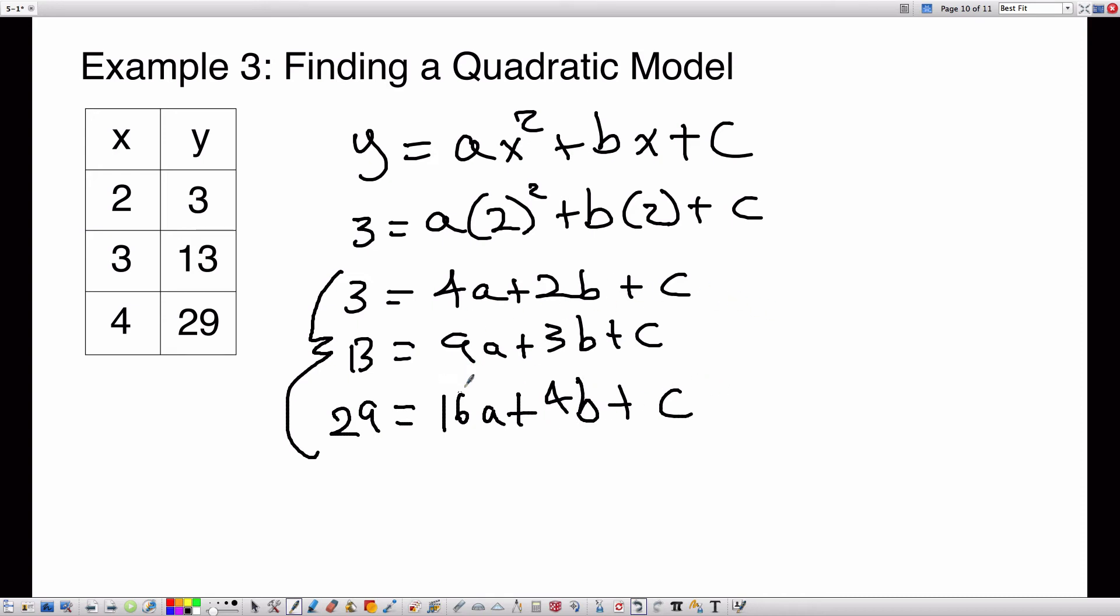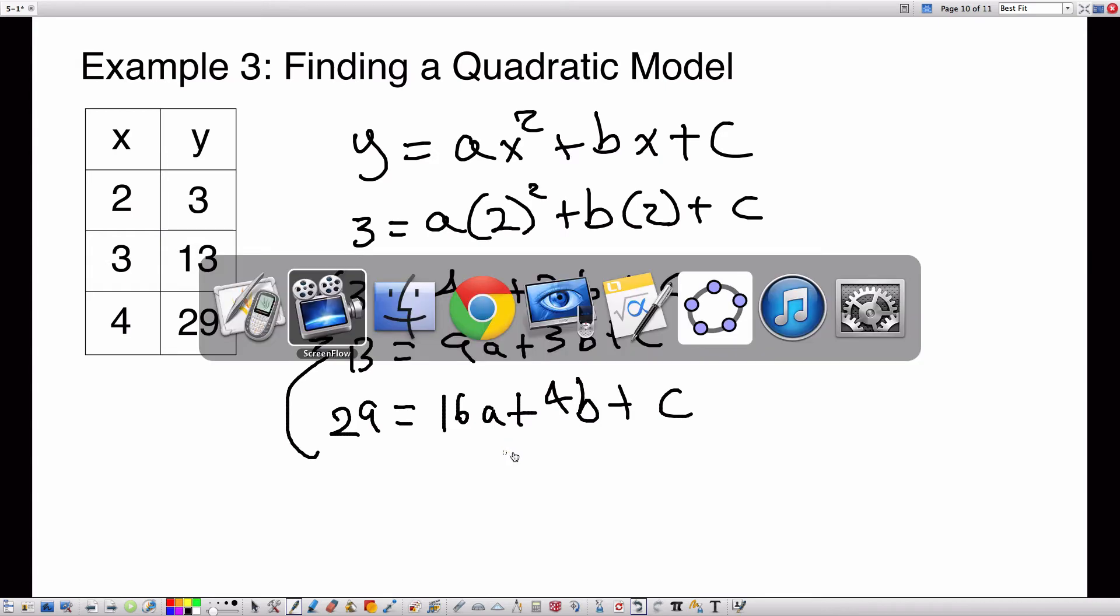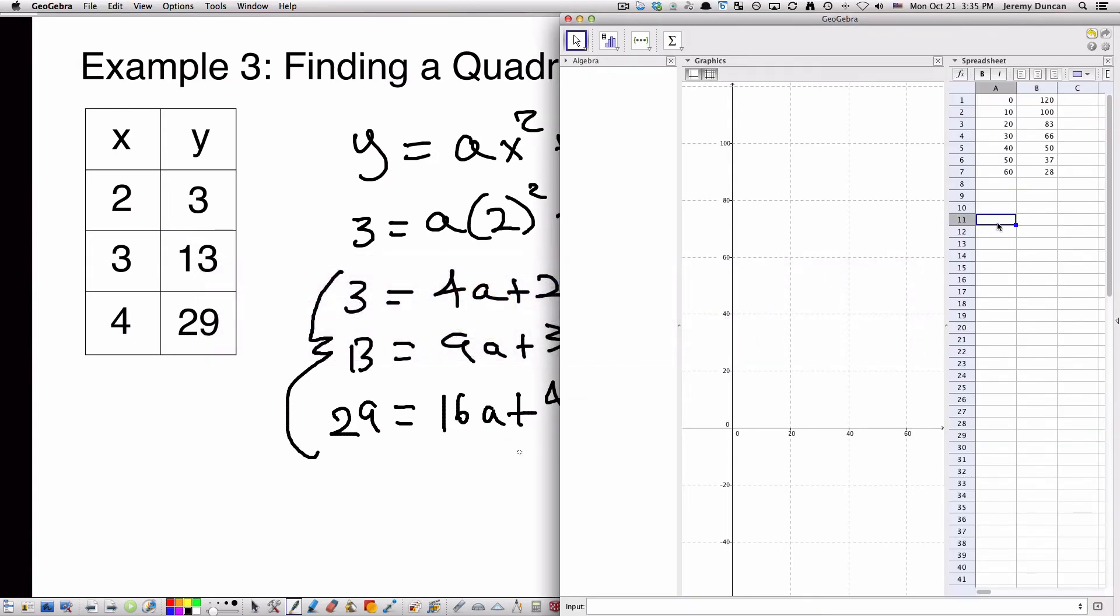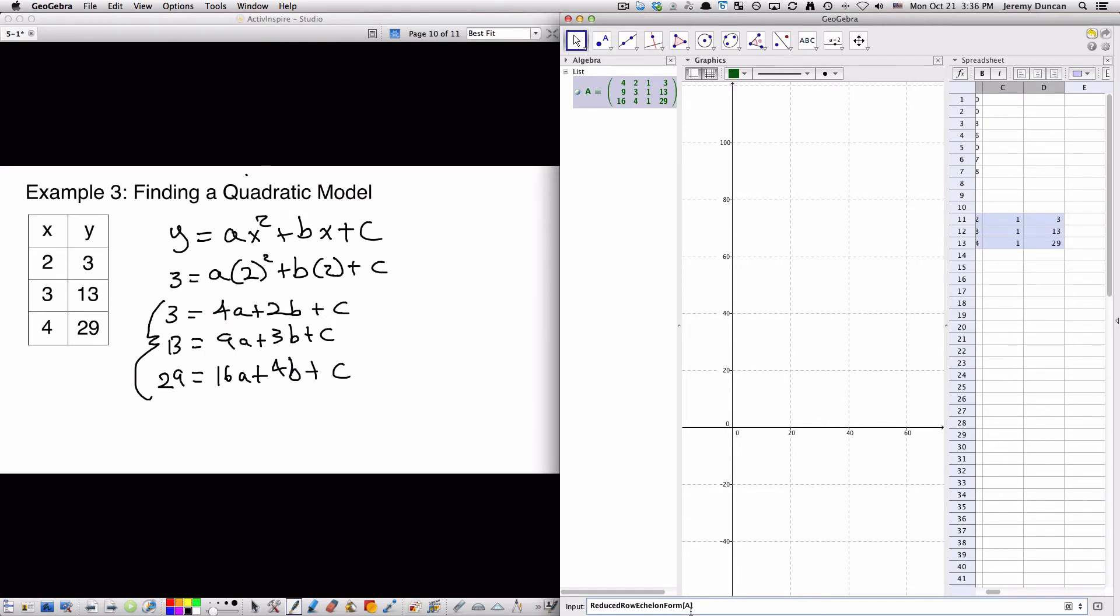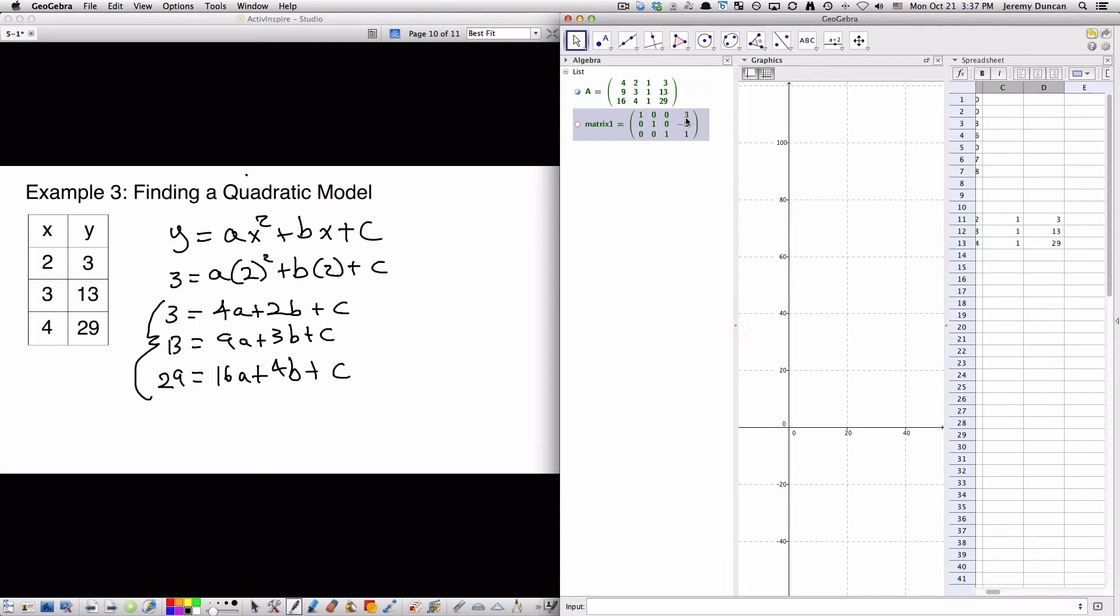I have my matrix here. I've augmented this matrix. The coefficients from this side are the first terms, the 3 by 3 terms, and then 3, 13, 29 are the solutions. So now I'm going to find the reduced row echelon form of A, and that gives me the identity in 3, negative 5, 1. So A is equal to 3, B is equal to negative 5, and C is equal to 1.